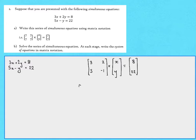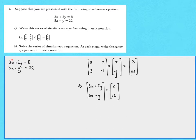We could check that this matches our simultaneous equations by multiplying out the matrices. Multiplying out, we'd have 3x plus 2y at the top and 5x minus y at the bottom, which equals [8; 22]. So 3x + 2y = 8, which is just what we started with, and 5x - y = 22, which is again just what we started with.